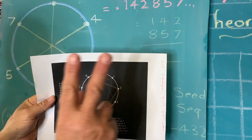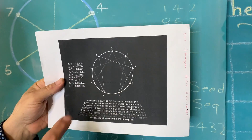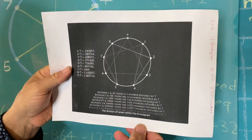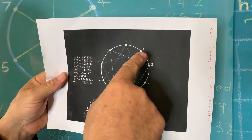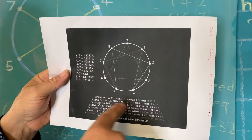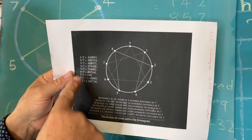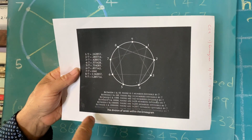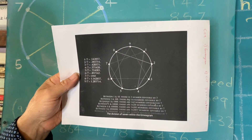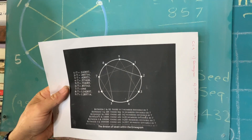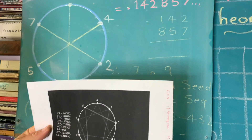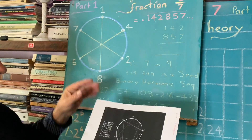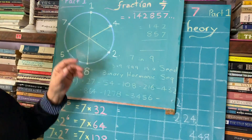Part one is going to show us how the number seven is embedded in the nine-point circle. We're going to explore the decimal 142857 inside the nine-point circle, and in part two we're going to look at what Gurdjieff did with it. So this is part one and then part two.